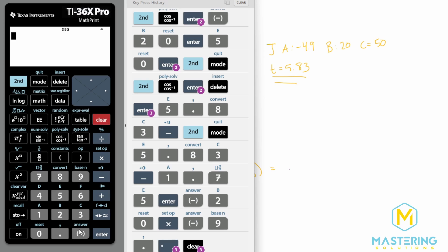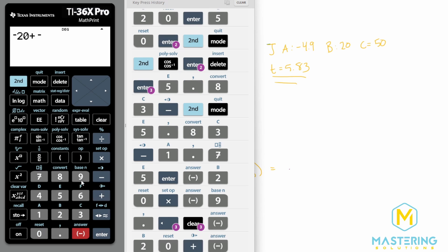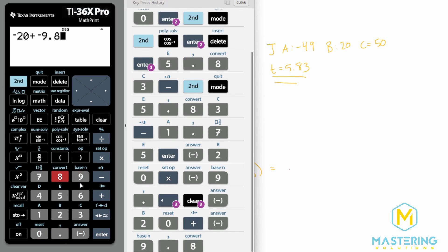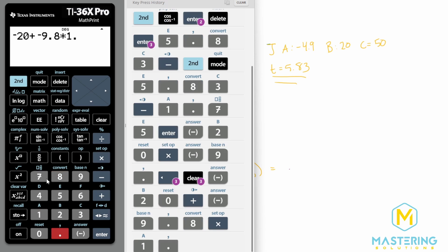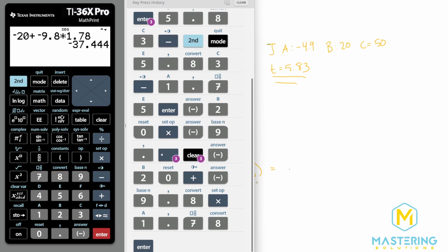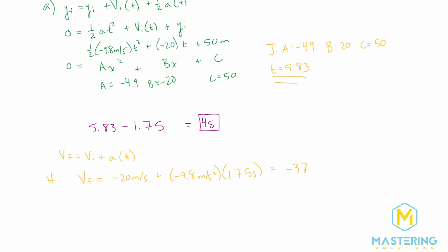So for Heather, we have negative 20 plus a negative 9.8 times the time of 1.75. So we have negative 37.44 meters per second is the final speed for Heather's rock. Let's do the same thing for Jerry. So his final velocity will be equal to his initial velocity of 20 meters per second plus a negative 9.8 meters per second squared times his time, which was 5.83 seconds.